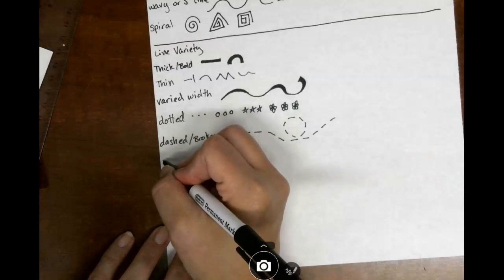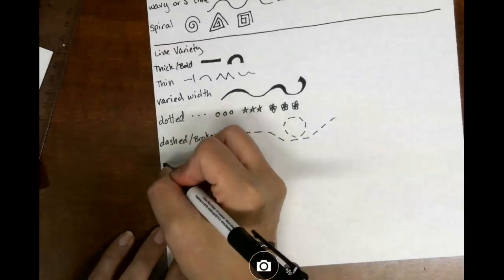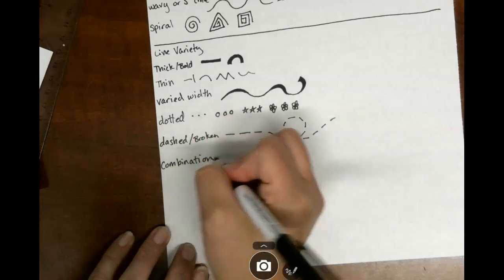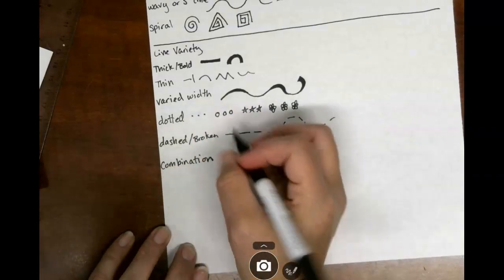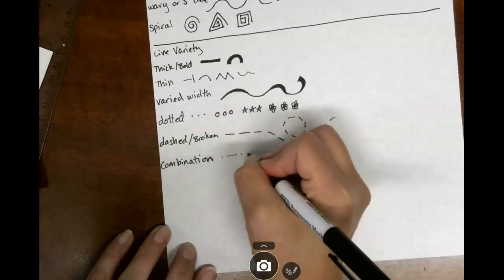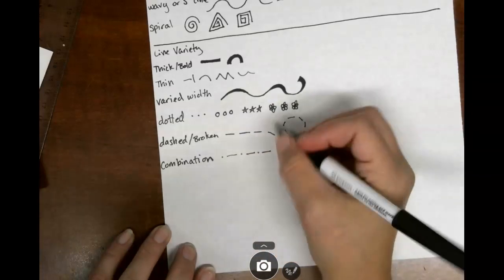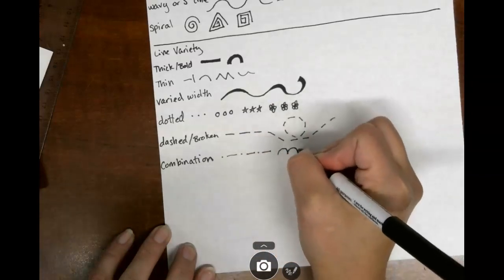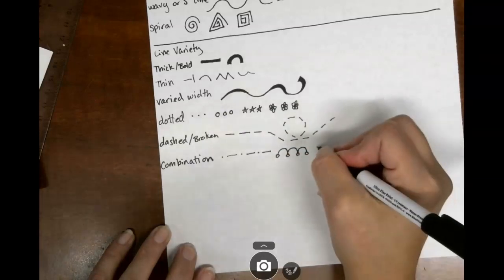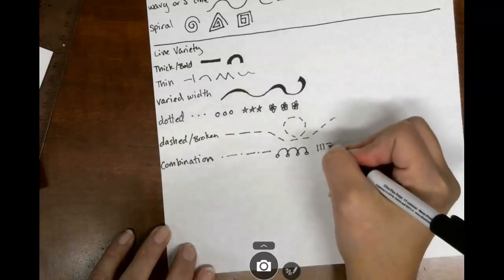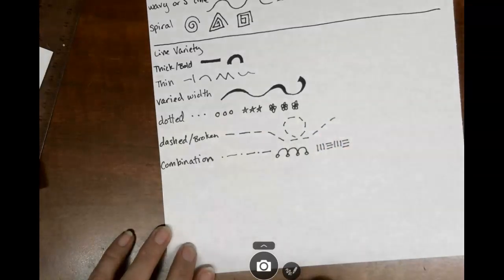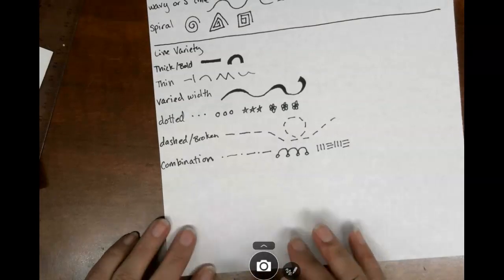Then the one that we're going to be looking at the most is a combination line, C-O-M-B-I-N-A-T-I-O-N, that's an N not an M. And this is where we combine different lines. So here's a dotted and a dashed. We got curved and dotted. This is where the magic happens with lines looking interesting. It doesn't have to take much to be a combination line, but it does look really good.